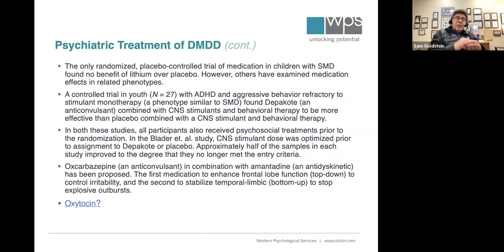There's also a link for oxytocin. Oxytocin is the chemical released when mothers give birth — it creates a connection between birth, mother, and child. It has been used in studies with kids with autism, demonstrating some improved social behavior. Some call it the love drug. There's more fable than fact about oxytocin, but you can read the link about DMDD and oxytocin.